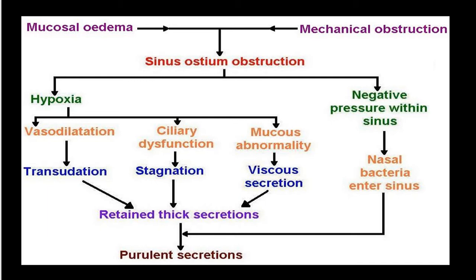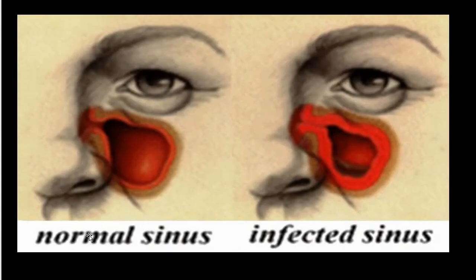Vasodilation leads to transudation, ciliary dysfunction leads to stagnation, and mucous abnormality leads to viscous secretion — all resulting in retained thick secretions and eventually purulent secretions causing sinusitis. Sinus ostium obstruction also creates negative pressure within the sinus, allowing bacteria to enter and causing inflammation and purulent secretions. Infection starts when the ostium becomes closed and secretions or debris cannot drain out.